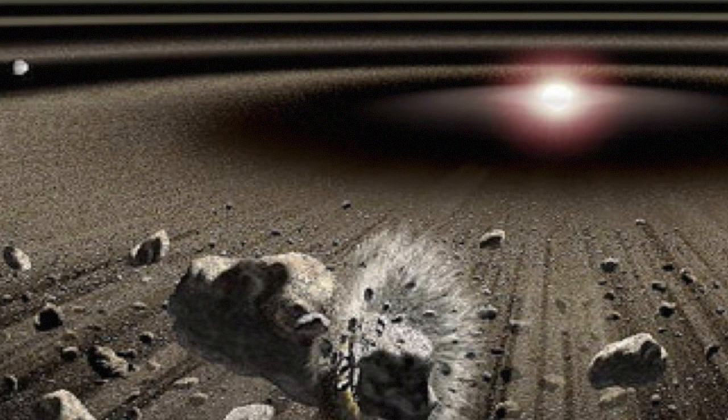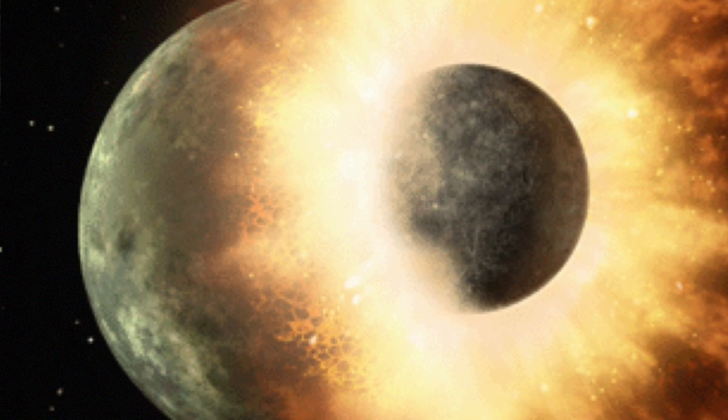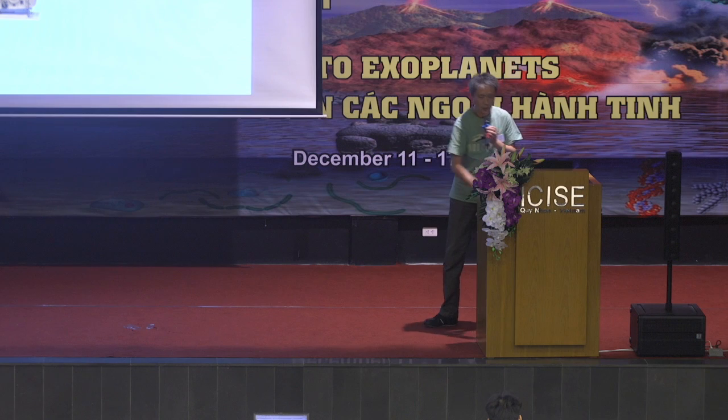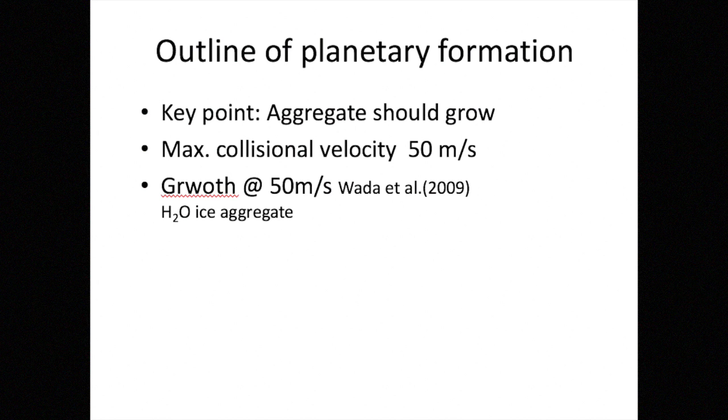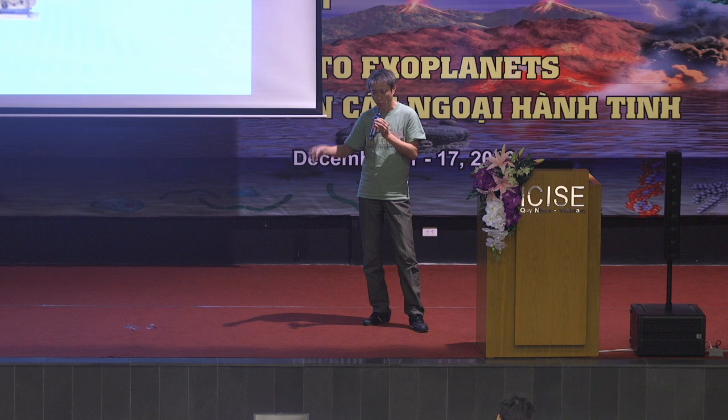And then planetesimals are formed and then collide to form protoplanets. And protoplanets collide together to finally form planets. And in these processes, the key point is aggregate growth, because aggregates should grow to form planetesimals.